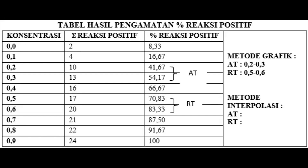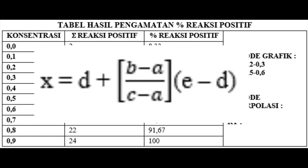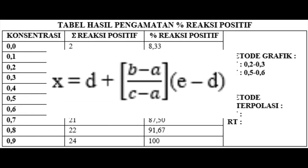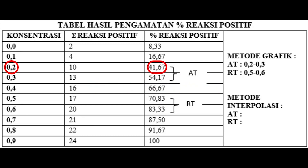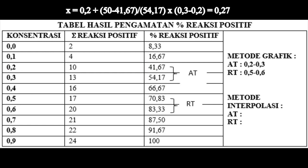Kemudian, untuk metode interpolasi, menggunakan rumus X = D + ((B - A) / (C - A)) × (E - D). Langsung ke perhitungan untuk mencari AT: nilai D-nya 0,2, B-nya 50, karena ketentuan AT itu 50%, A-nya 41,67, C-nya adalah 54,17, dan E-nya adalah 0,3. Kemudian, tinggal dimasukkan dan didapatkan 0,27.